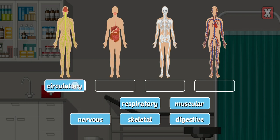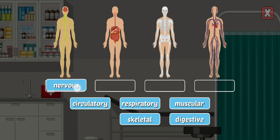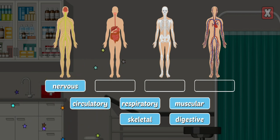Circulatory System. Nervous System — the nervous system consists of the brain, spine, eyes, and other sensory organs.